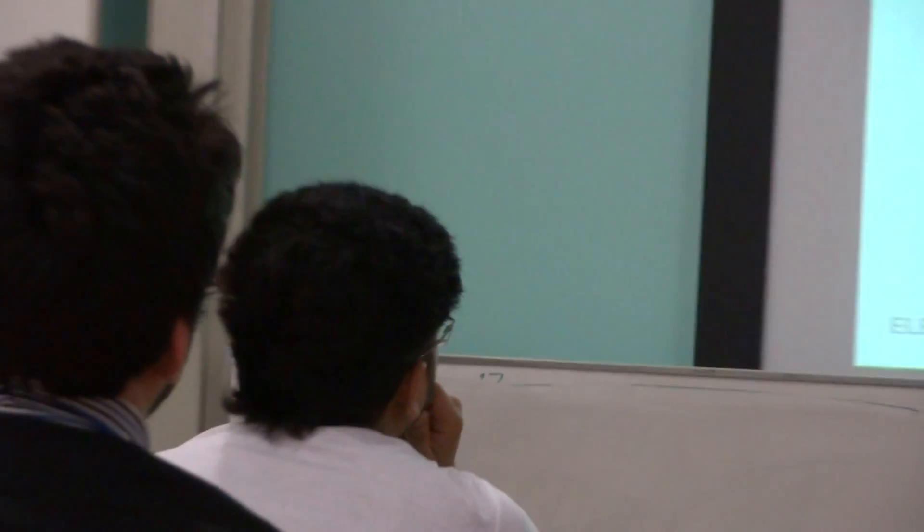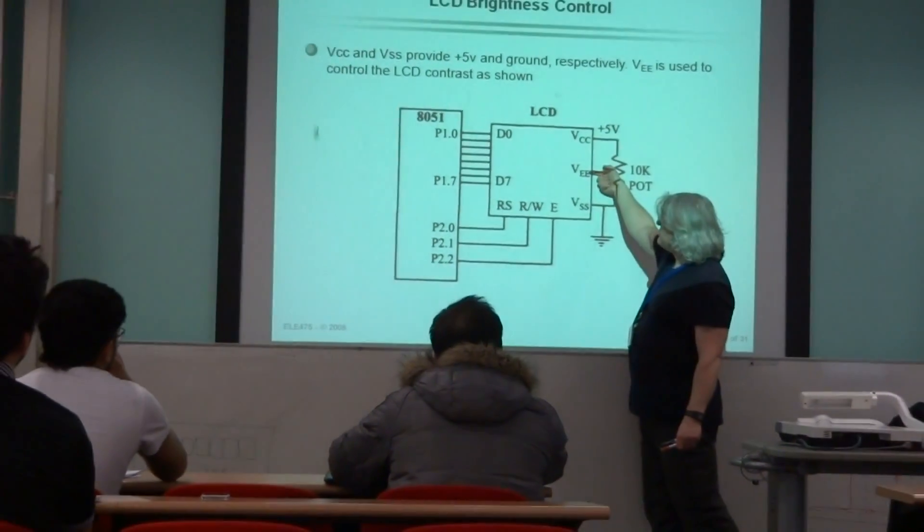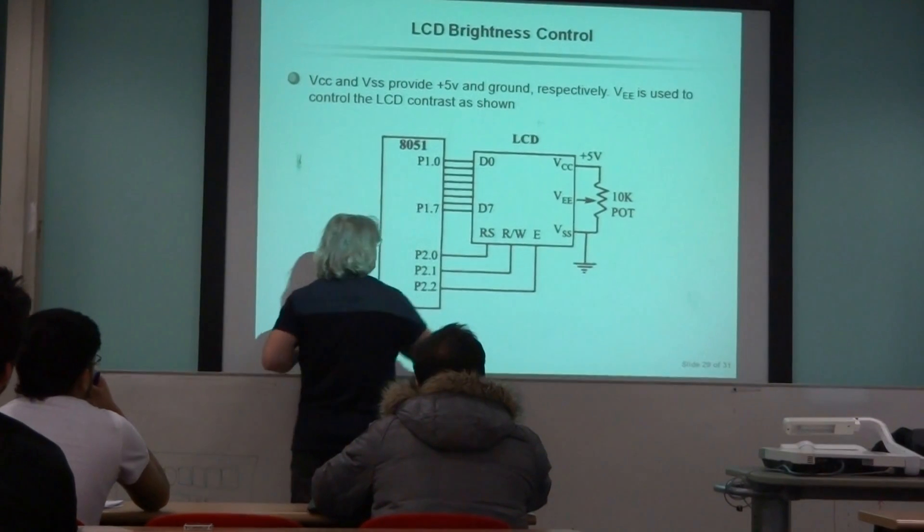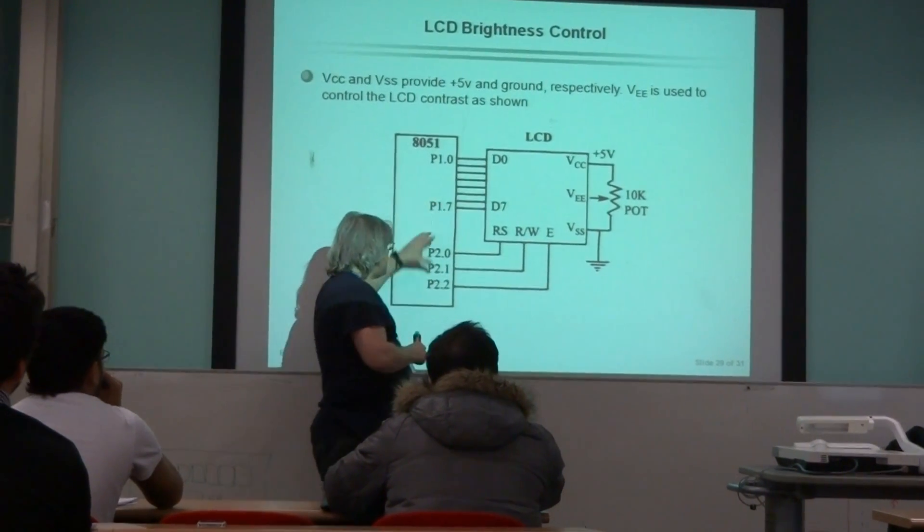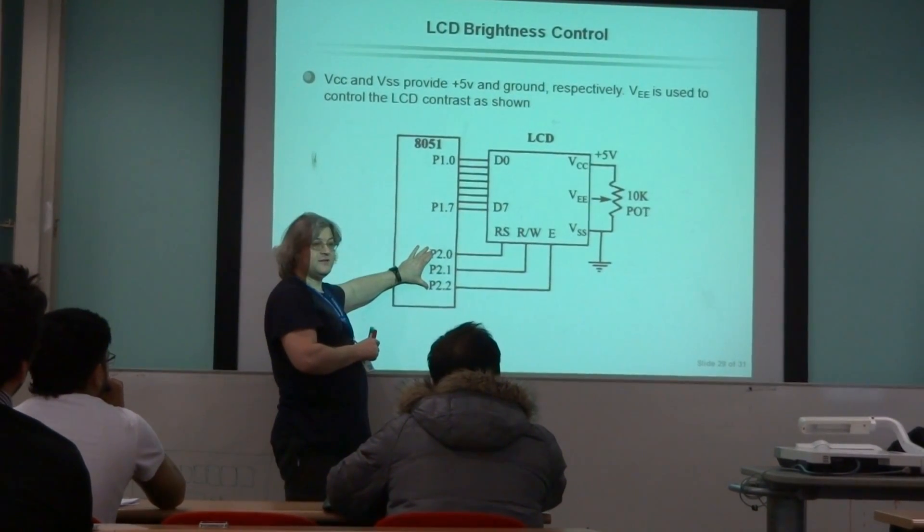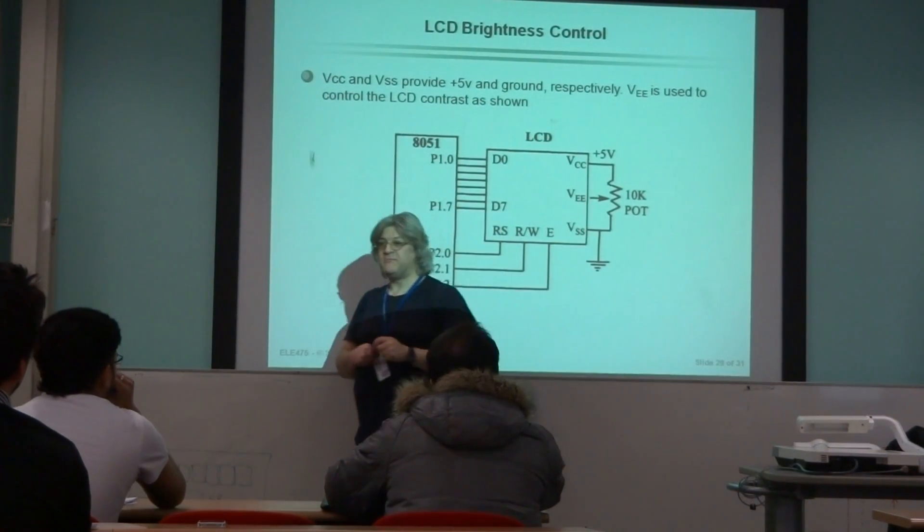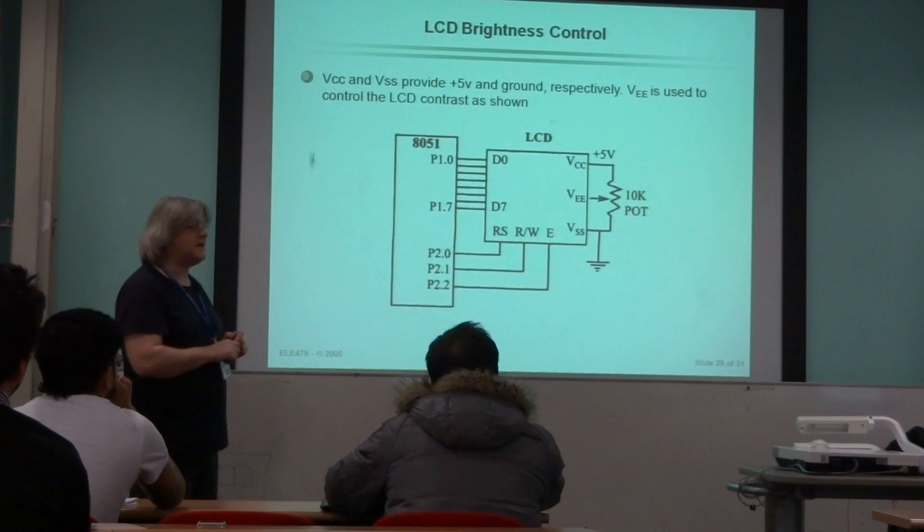There's an example here where I'm only using 5 volts and ground. This is the thing that provides the contrast between the two. So there's 8 lights here, plus 3 here. So that's 11, and then 12, 13, 14. That's all the 14 pins on the LCD.